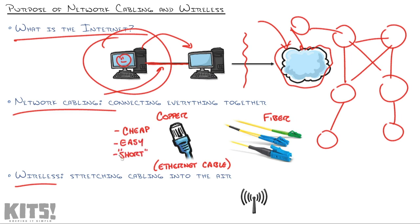The beauty of copper cable is it's cheap, easy to work with, and really good for short distances — and I define short as 100 meters or less. Fiber is a little more expensive and a little more difficult to work with, but it can go really long distances. That's what those schools used when they connected together — even way back then, fiber optic cabling was real, and instead of going a few hundred meters, it could go miles and miles — or kilometers and kilometers — to connect big buildings together.